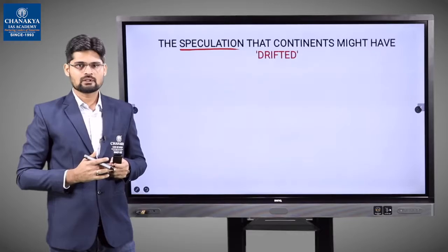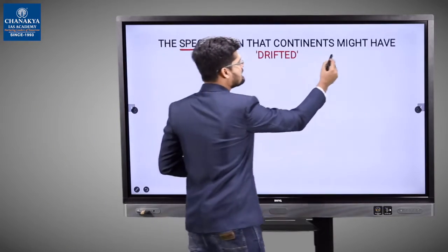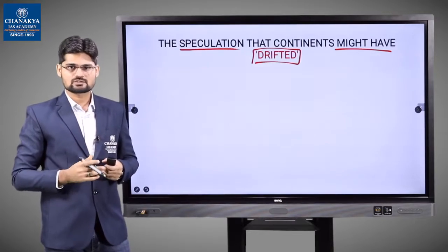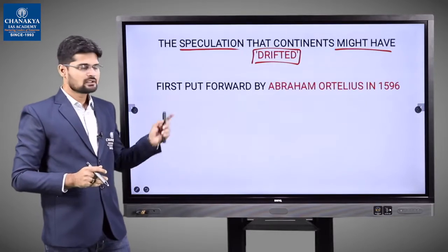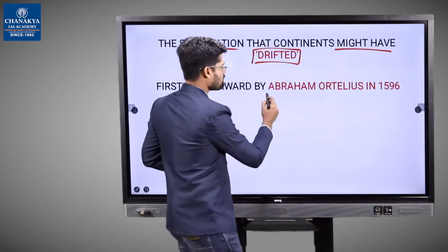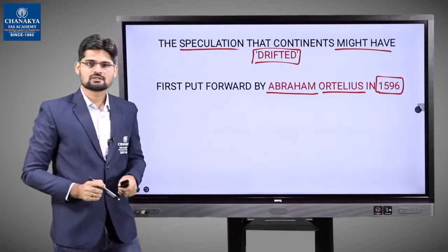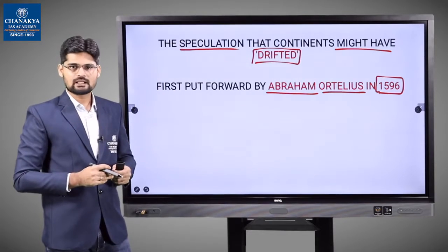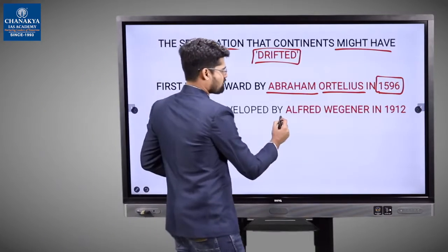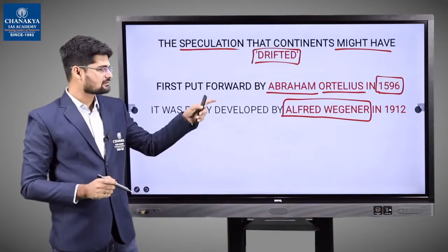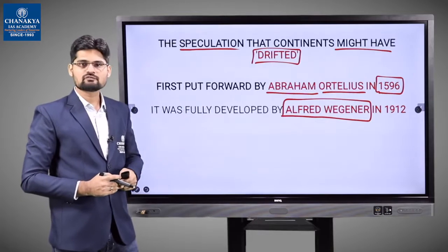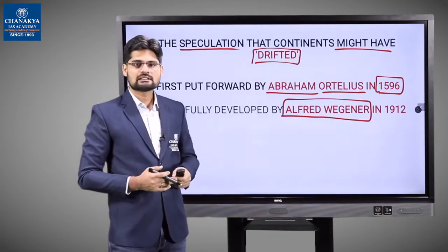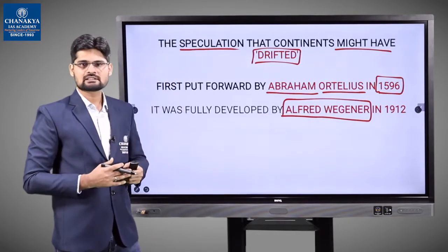Before continental drift became a formal theory, there was lots of speculation that continents might have drifted. The first person who thought of this was Abraham Otelius in 1596 — end of the 16th century — almost 400 years back. The theory was developed fully by Alfred Wegener, a German meteorologist, in 1912, just around the First World War. Alfred Wegener is called the father of this theory.